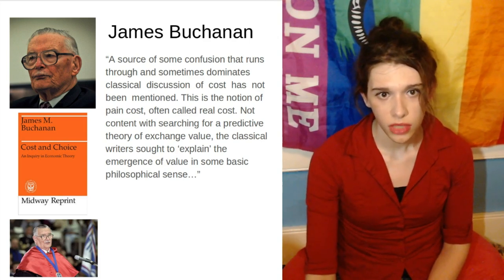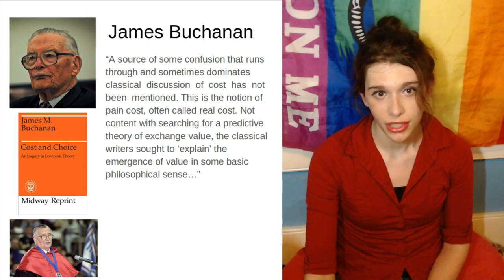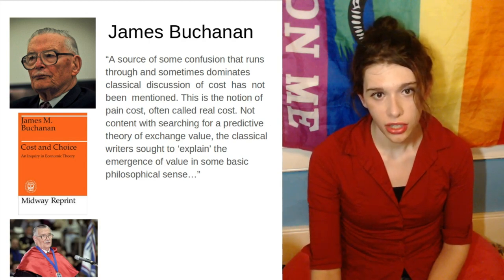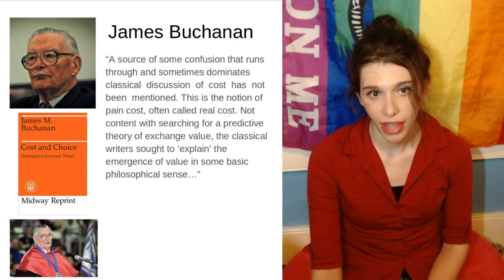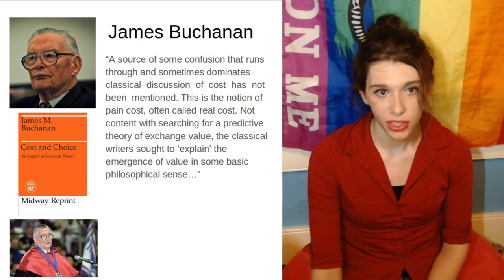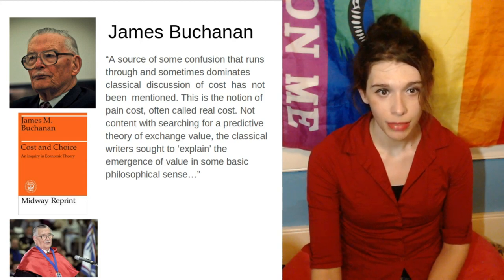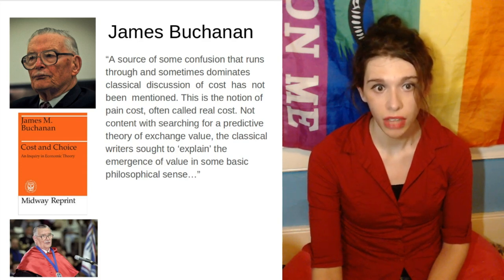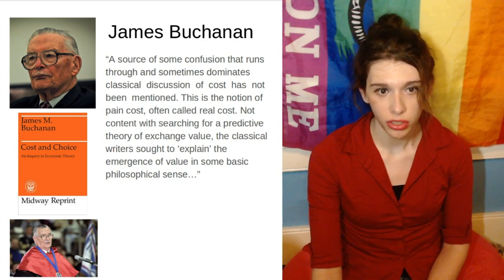To quote from his work Cost and Choice: 'A source of confusion that runs through and sometimes dominates classical discussion of cost has not been mentioned. This is the notion of pain cost, often called real cost. Not content with searching for a predictive theory of exchange value, the classical writers sought to explain the emergence of value in some basic philosophical sense. The toil and trouble, the physical pain involved in working seemed to justify the payment of wages. Observation revealed that capital also received payment. Hence, the concept of abstinence developed by Senior seemed to place the capitalist alongside the wage earner as a recipient of justifiable rewards. The importance of this real cost doctrine in sowing confusion should not now be underestimated.'